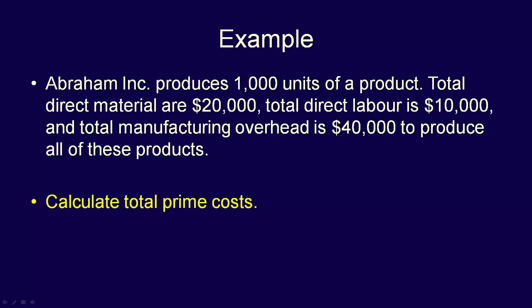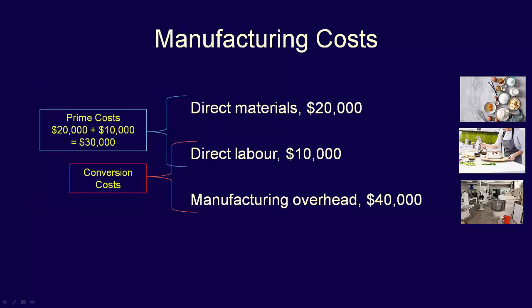What are the total prime costs? Remember that prime costs are made up of the direct costs, which is the direct materials and the direct labour. Prime costs therefore equal $20,000 of direct material and $10,000 of direct labour.